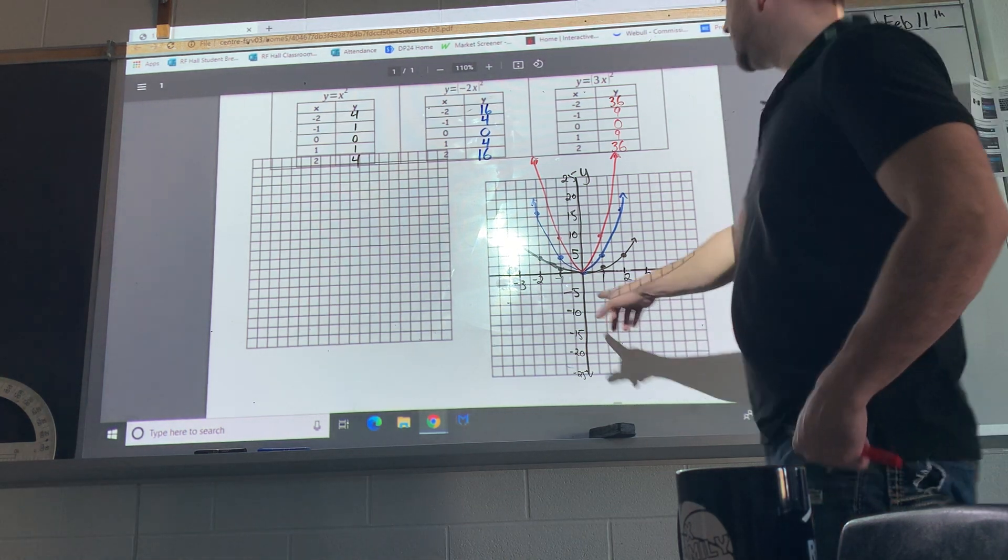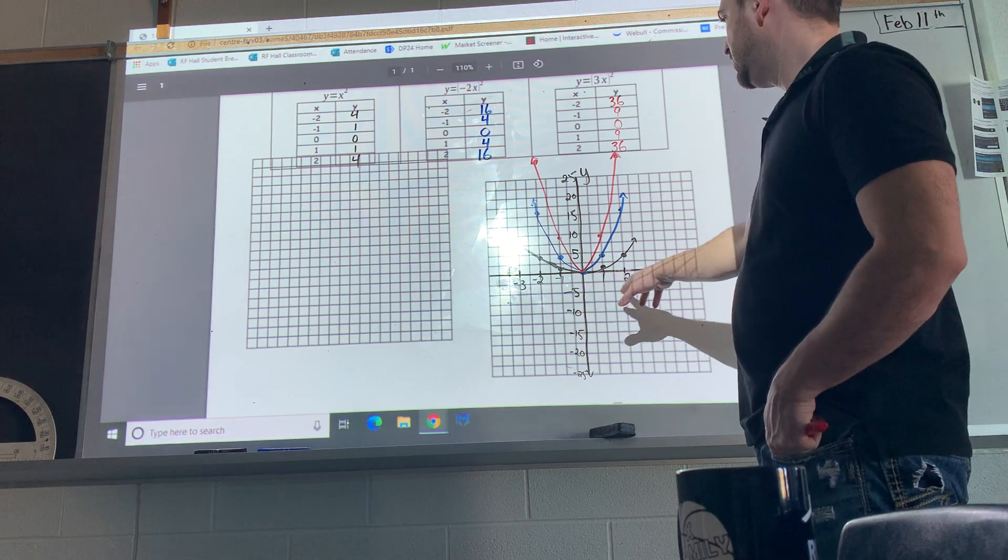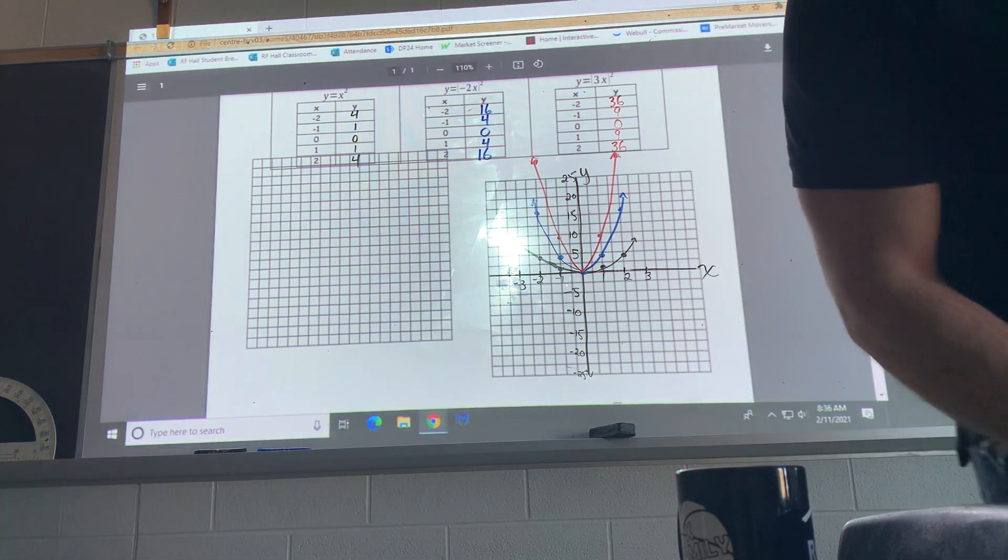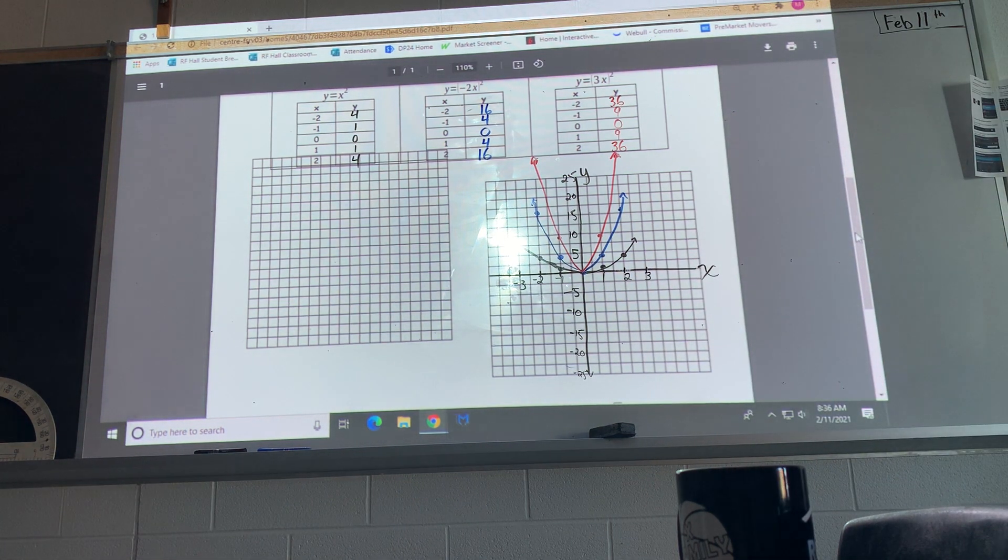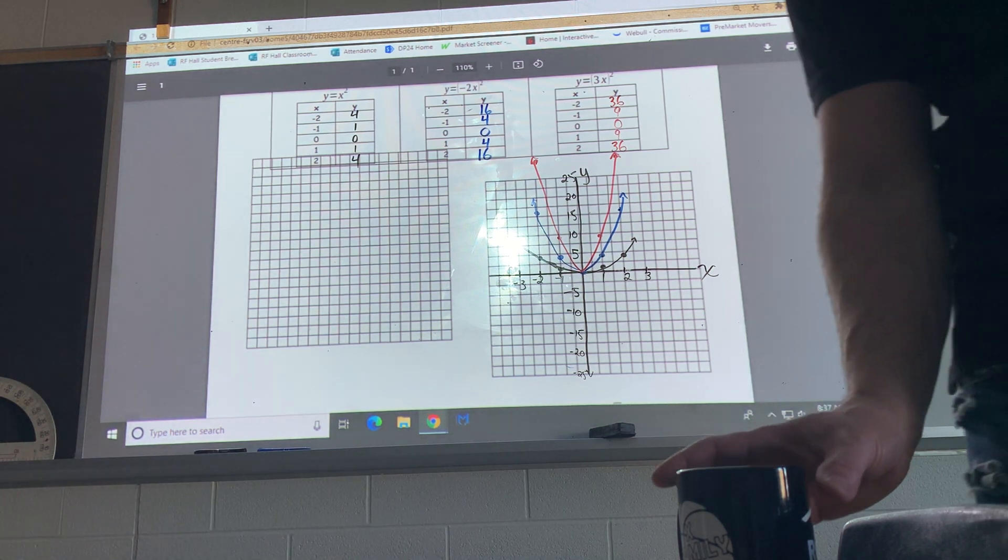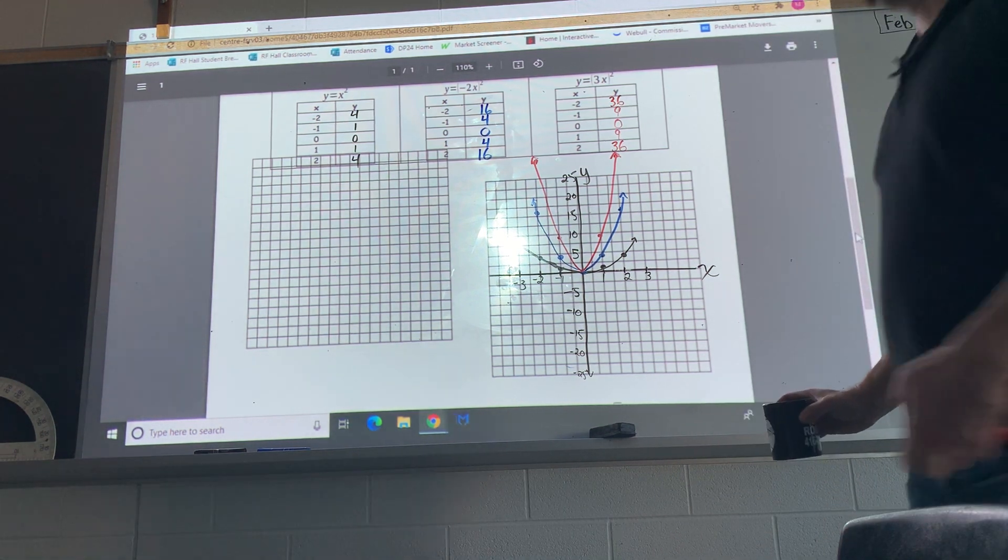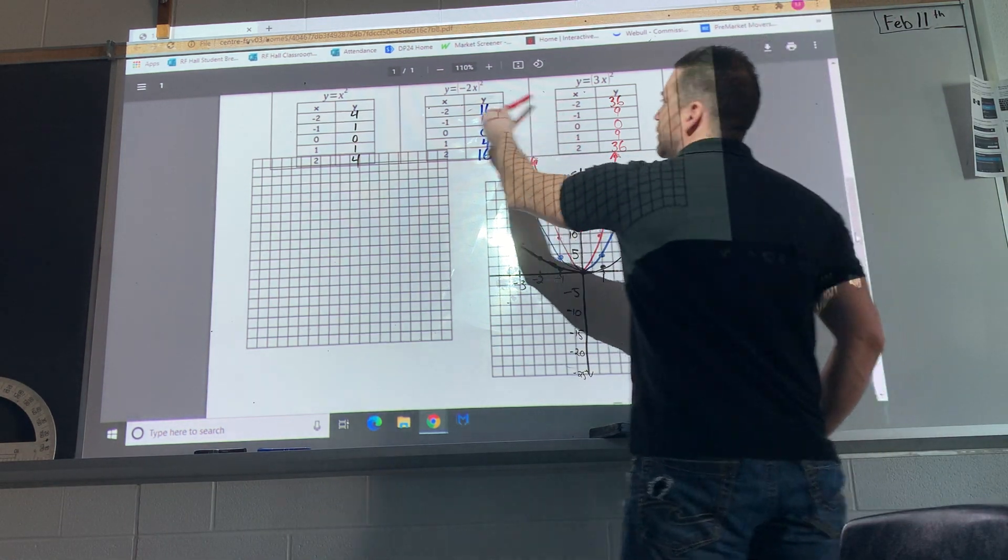On the x-axis, negative 1, negative 2, negative 3, and then 1, 2, 3. I'm only using values because we only use from negative 2 to 2, right?